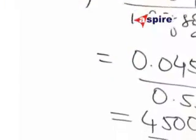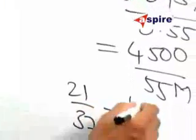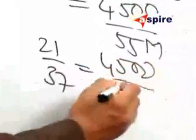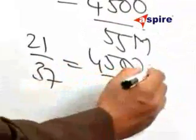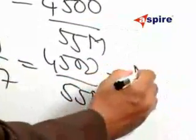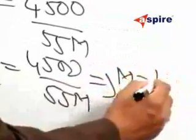Therefore, 21 by 37 is equal to 4500 by 55 m. Simplifying this, we will get m is equal to 144.